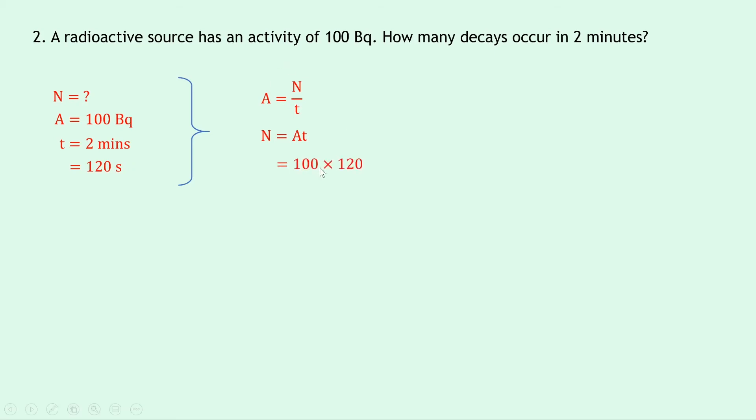Substituting in the numbers now we get 100 times 120, which gives us a final answer of 1.2 times 10 to the 4 when we write it in scientific notation. Notice as well that there's no units here.